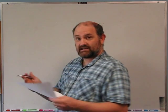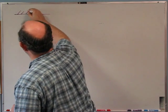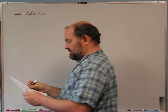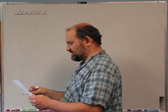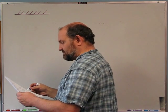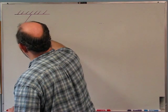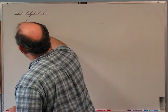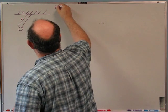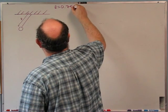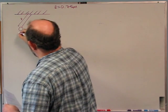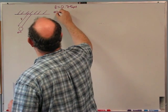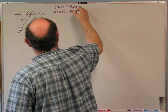The second problem: we have a pendulum. It consists of a lightweight — essentially massless — string that is 75 centimeters long, and a bob at the bottom with a mass of 150 grams. So L = 0.75 meters and M = 0.150 kg.